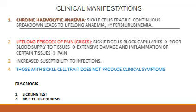There is increased susceptibility to infection. Those with sickle cell trait do not produce clinical symptoms. These clinical manifestations I have mentioned are for sickle cell disease, where both beta chains are affected — not in the case of sickle cell trait, where only one of the chains is affected.